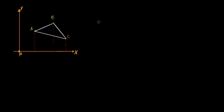So in this video, we try to work out the area of a triangle in a Cartesian setup. That means, if you know the coordinates of the vertices of a triangle — A, B, and C — then what should be the area of such a triangle?